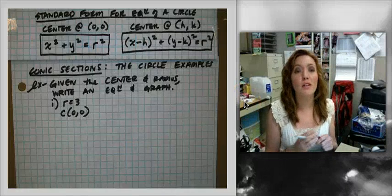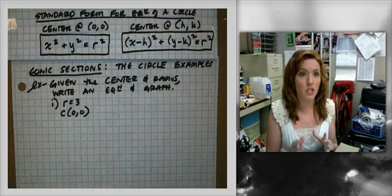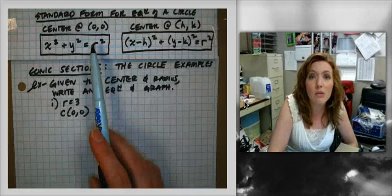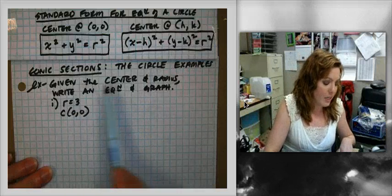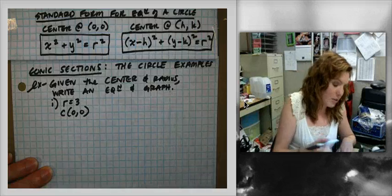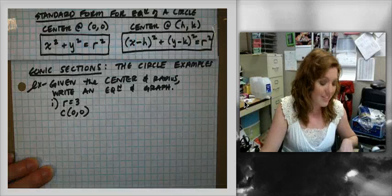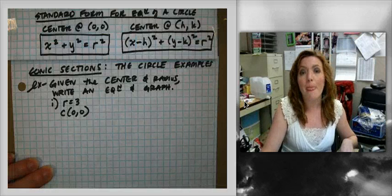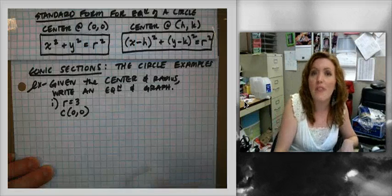Continuing on, here are some examples to get you guys moving with how the circle actually works. I have up here, just for our reference, the standard form for the equation of a circle for both center at (0,0) and center at somewhere other than (0,0). In our examples, if we're given the center and the radius, we want to write an equation for the circle and then graph it.